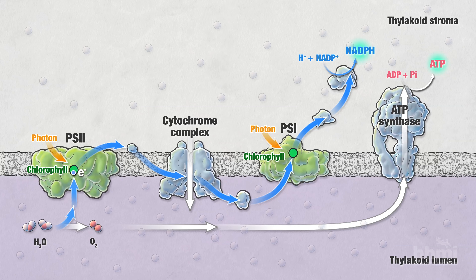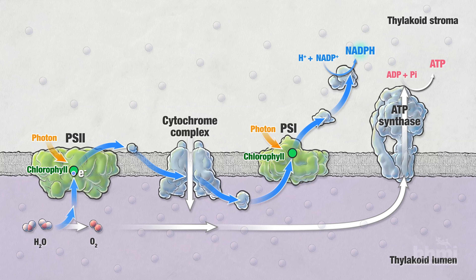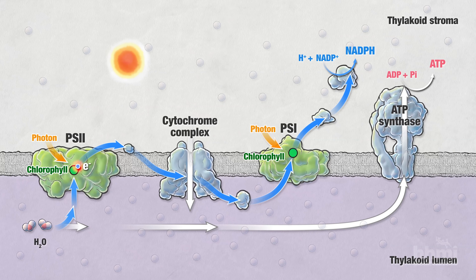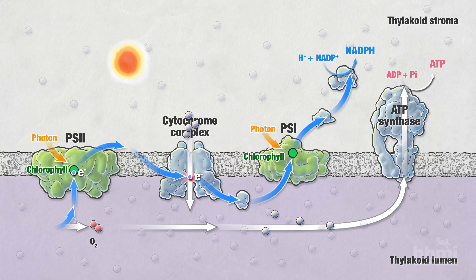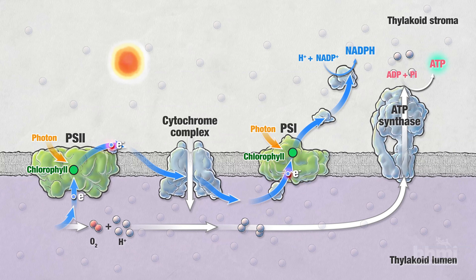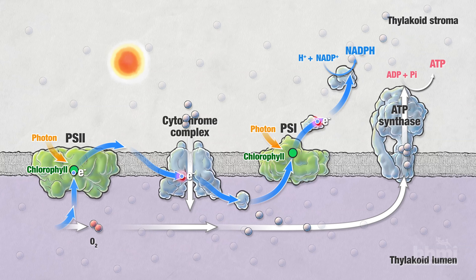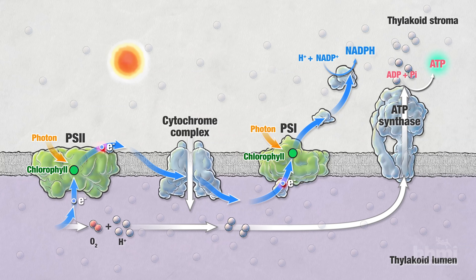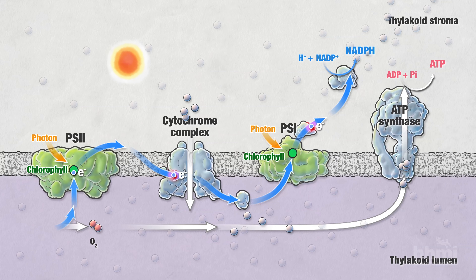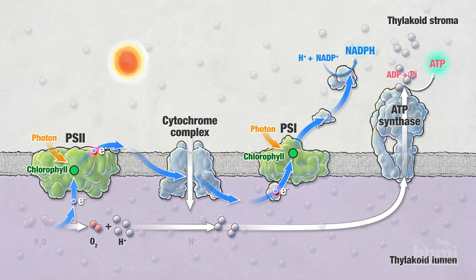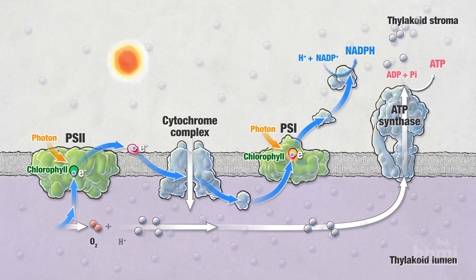Some of the energy from light is now stored in the reduced molecule NADPH. Some of the energy released from the transfer of electrons established a proton gradient across the thylakoid membrane. Protons that accumulated in the lumen diffuse into the stroma through an enzyme called ATP synthase. ATP synthase uses the potential energy of the proton gradient to combine ADP with inorganic phosphate to form ATP. In this way, the potential energy is transformed into chemical energy stored as ATP.